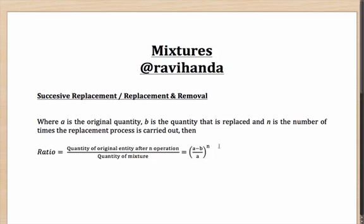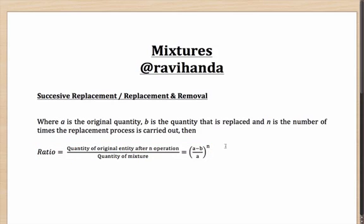In case this formula is not very clear, let me repeat it. Say you had A as the original quantity, B is the quantity which was taken out and replaced, and the process was done N times. Then finally, the fraction of the original entity in the total mixture is going to be (A minus B) by A, to the power of N.